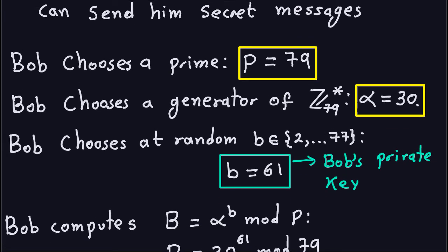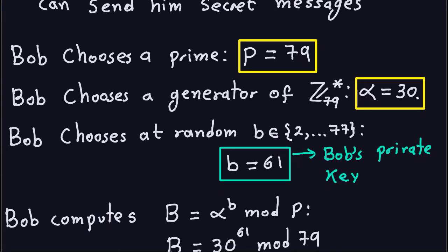The next thing is that Bob chooses a random number B, which is going to be his private key. It has to be a number between 2 and P minus 2. So this number here is 77, which is P minus 2, because P is 79.